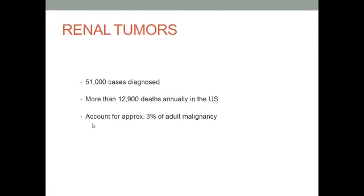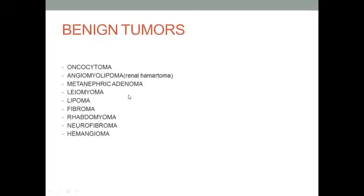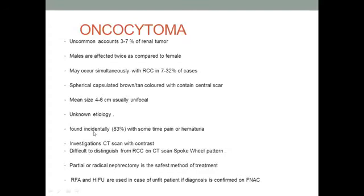Renal tumors represent around 3% of all adult malignancies with many cases and deaths in the United States. They are divided into benign and malignant tumors. There are many benign tumors that can occur in the kidney, but oncocytoma and angiomyolipoma are the two most common. The kidney can also be the site of adenoma, leiomyoma, lipoma, fibroma, rhabdomyoma, neurofibroma, and hemangioma.